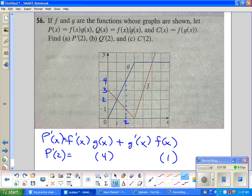I think the slope here is negative 1. Plus I think the slope of g is positive 2. I think the answer to this problem is negative 4 plus 2. I would say that P prime of 2 is negative 2.